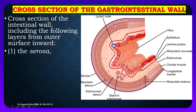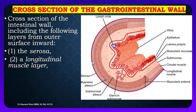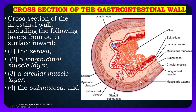The outermost layer is the serosa. The second layer is the longitudinal muscle layer. The muscle layer consists of two types of muscle: longitudinal and circular. So one layer is longitudinal and the other layer is the circular layer. The fourth layer is the submucosa.